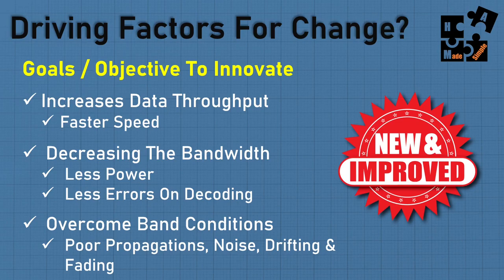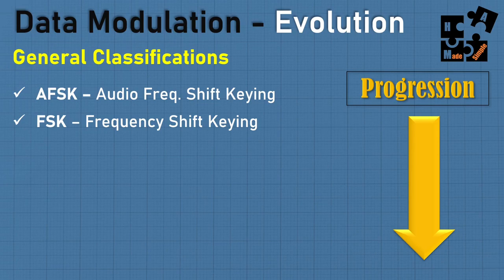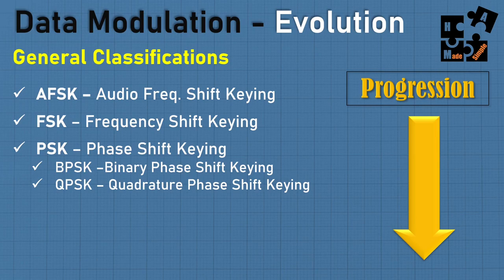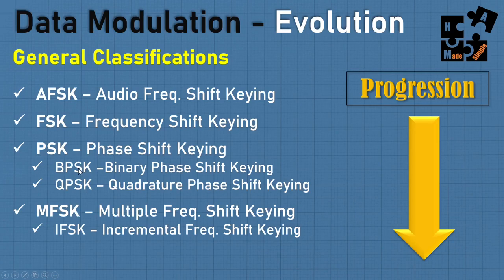Looking at the progression of data modulation: AFSK — audio frequency shift keying — was basically the first one, followed by FSK — frequency shift keying. AFSK has basically disappeared. What you see today is FSK to a limited degree, much more PSK — phase shift keying — which includes binary phase shift keying and quadrature phase shift keying. Then there's multiple frequency shift keying (MFSK), and a variation called incremental frequency shift keying. The majority today are PSK variations and MFSK, which is the newest that has come out.